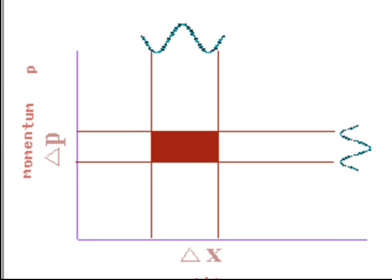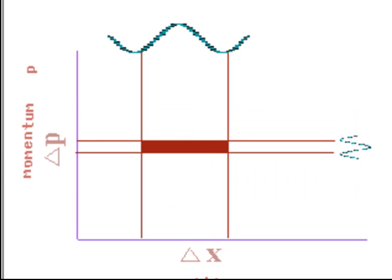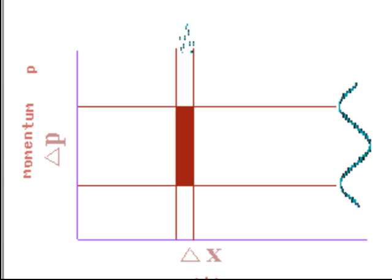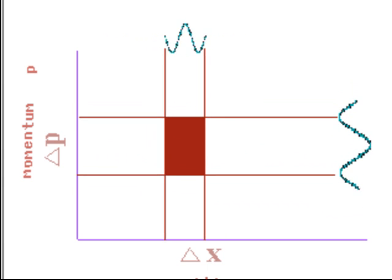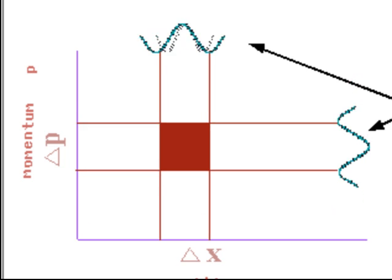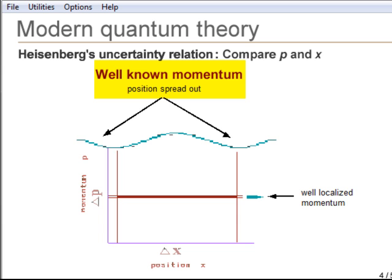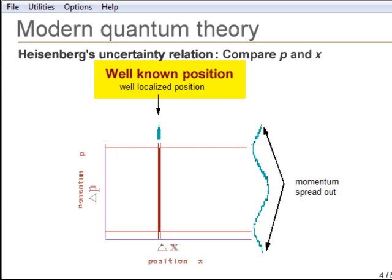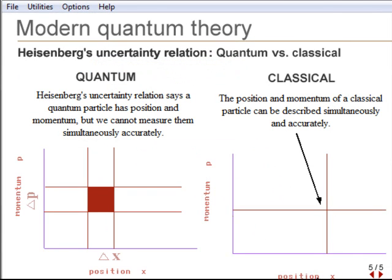Because a particle has wave motion, when we measure its position and momentum, we have either a localized position wave with a corresponding delocalized momentum wave, or vice versa.